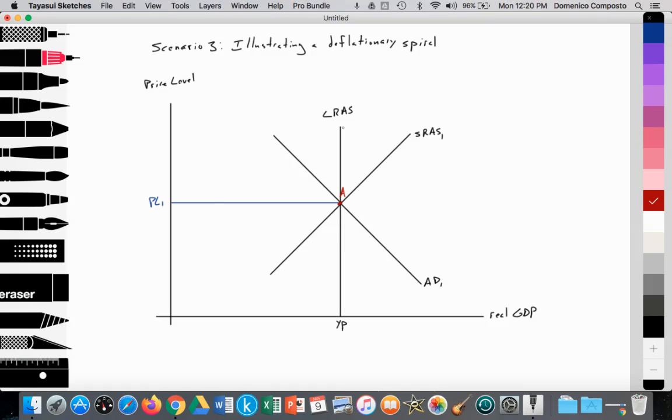We have our long-run aggregate supply curve that's perfectly inelastic, our upward-sloping short-run aggregate supply curve SRAS1, our downward-sloping aggregate demand curve AD1, and they intersect at point A, providing a price level at PL1, and full potential GDP at YP. We're at full employment.